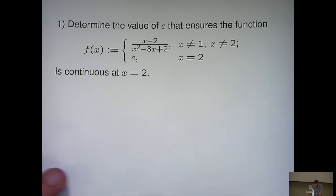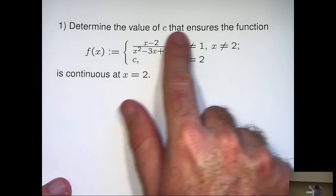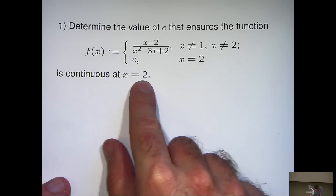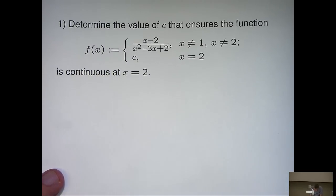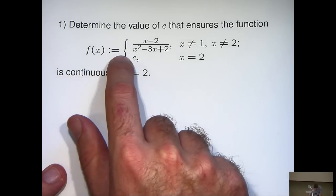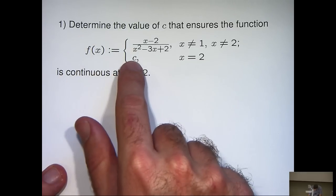And in particular, we are asked to determine the value of c, where c is a number, that ensures this function is continuous at x equals 2. Now you can see that the function is defined in kind of a split manner here. For the point x equals 2, f of x is just c, whatever c is.